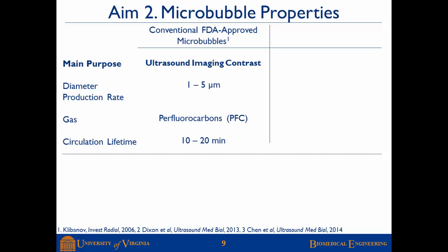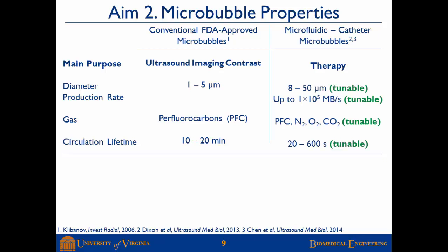Aim two was to characterize the microbubble properties. Microbubbles used in past sonothrombolysis applications — like DEFINITY or SONOVIEW — are primarily designed as ultrasound imaging contrast agents. They are small, one to five microns in diameter, with low solubility gases for long circulation lifetime. But these microbubbles may not be optimized for therapy. By placing a microfluidic device on the catheter, we can tailor the microbubble design for therapy, as a large body of work shows that larger microbubbles elicit stronger bio-effects when exposed to ultrasound — improved sonoporation, improved sonothrombolysis, and improved blood-brain barrier opening.